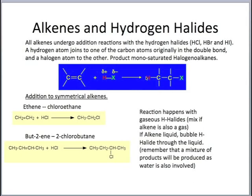The hydrogen atom will attach to the carbon originally in the double bond, and the halogen atom to the other carbon also originally in the double bond. The product is monosaturated, meaning there is only one halogen attached, and saturated because there are no more double bonds. In general, this product is a halogenoalkane.